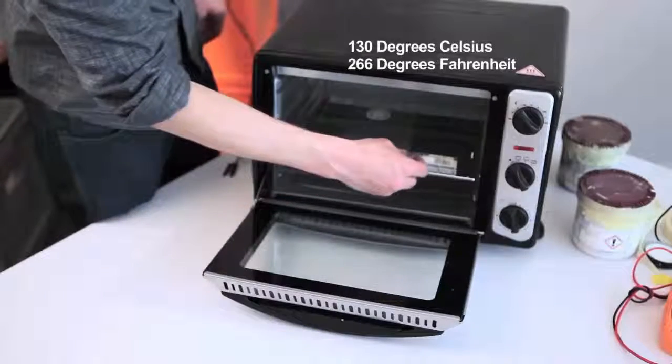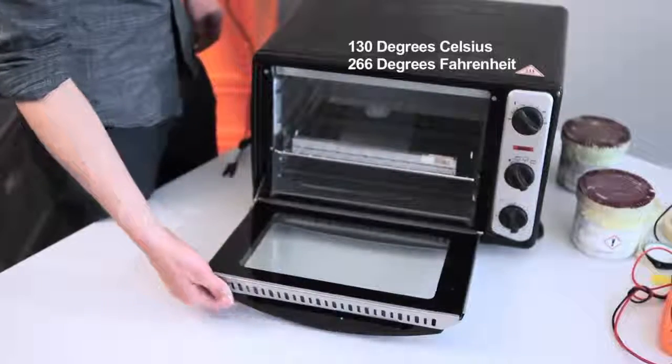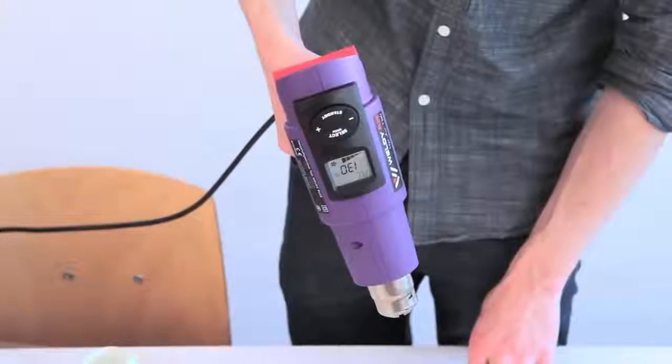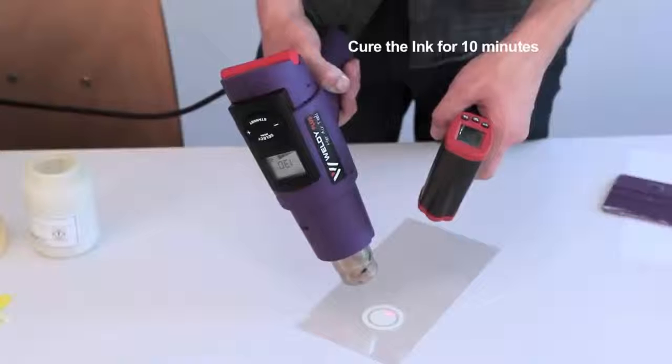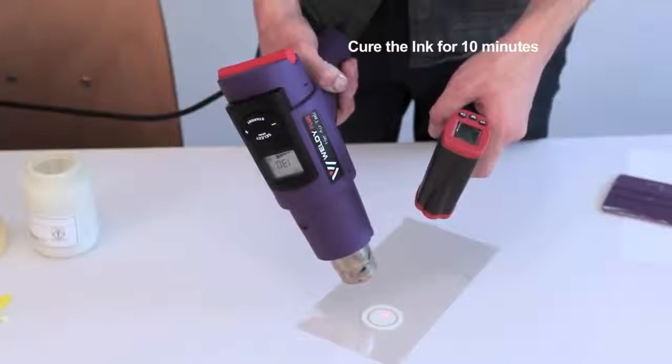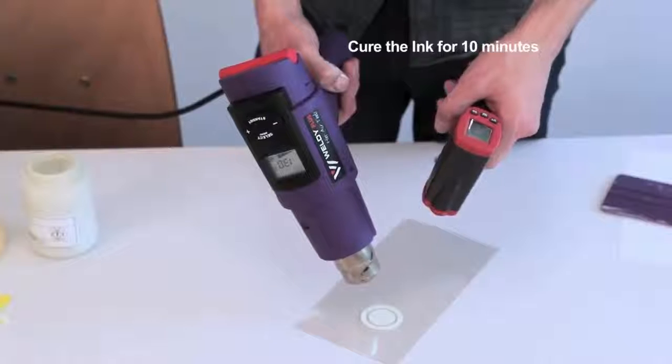We'll need to heat the inks to 130 degrees for 10 minutes to cure them. We can use an oven to do this, or a heat gun. Use a thermometer to check that you're reaching 130 degrees and being careful not to go too far over.